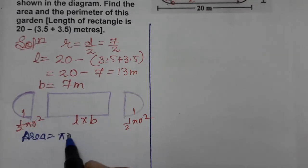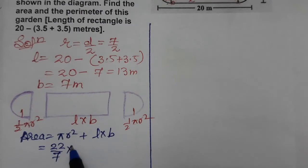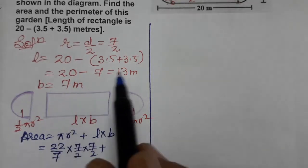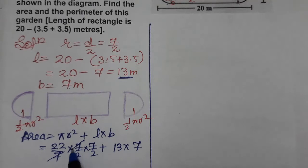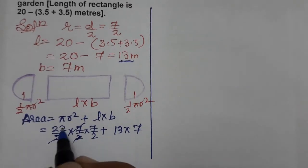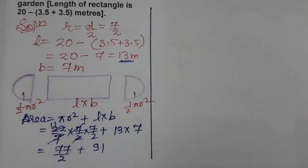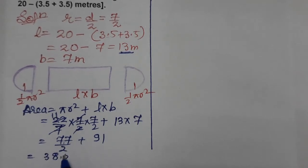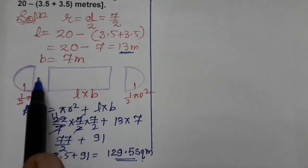Half plus half makes one, so the total area equals pi r squared plus length into breadth. Pi is 22 by 7, radius is 7 by 2, so pi r squared equals 22/7 × 7/2 × 7/2. The 7s cancel, giving 11 × 7 / 2 = 77/2 = 38.5. Length into breadth is 13 × 7 = 91. Total area equals 38.5 plus 91, which is 129.5 square meters.